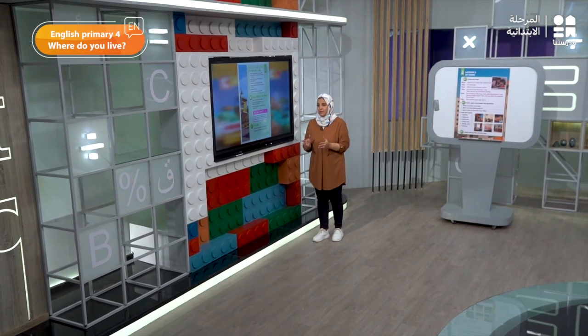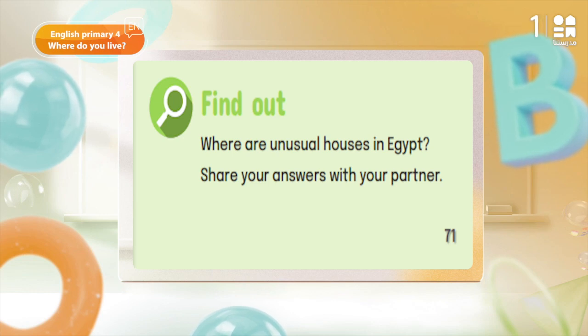I want to ask you some questions — has anyone been to Siwa Oasis? Has anyone seen a Nubian house? شفتوا بيت من بيوت النوبة؟ بيوت سيوة وبيوت النوبة جميلة جدا وبسيطة جدا. Can you say what's unusual about them? By the end of this unit you will be able to answer the main question and the title: where do you live? You will learn many new interesting things about the places.